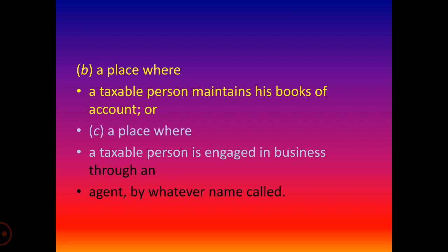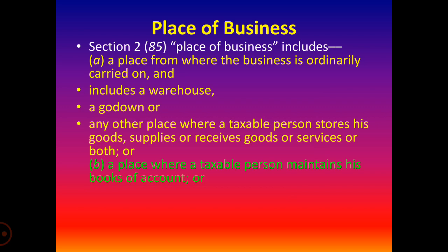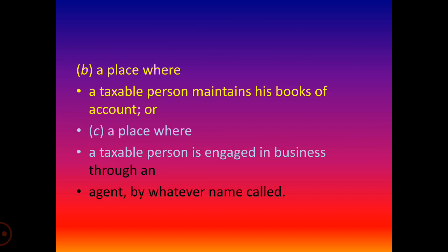This means a place where a person conducts business using the services of an agent, by whatever name called. To summarize: place of business includes a warehouse or godown from where the taxable person supplies or receives goods or services or both; a place where he maintains his books of accounts; or a place from where the taxable person is engaged in business activity through an agent, by any other name called.